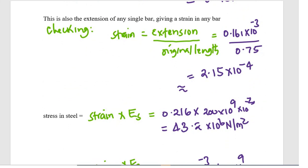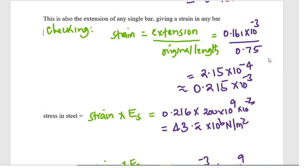To verify, we use strain equals extension divided by original length: 0.161 × 10⁻³ divided by 0.75, which gives approximately 0.215 × 10⁻³ — consistent with the strain computed above. The stress in steel is then strain times ES: 0.216 × 10⁻³ times 200 × 10⁹, giving 43.2 × 10⁶ N/m², or 43.2 MPa.